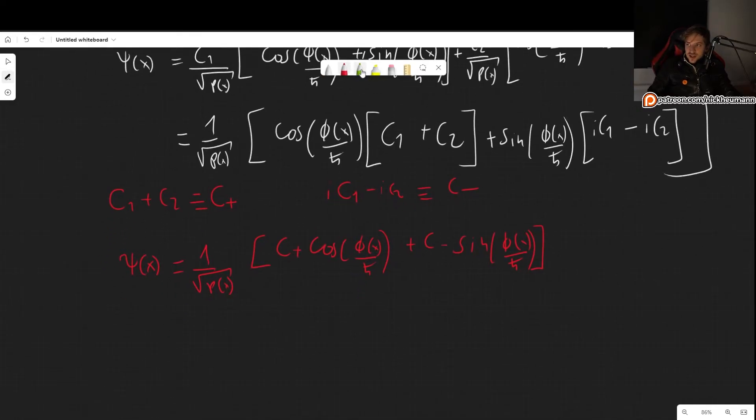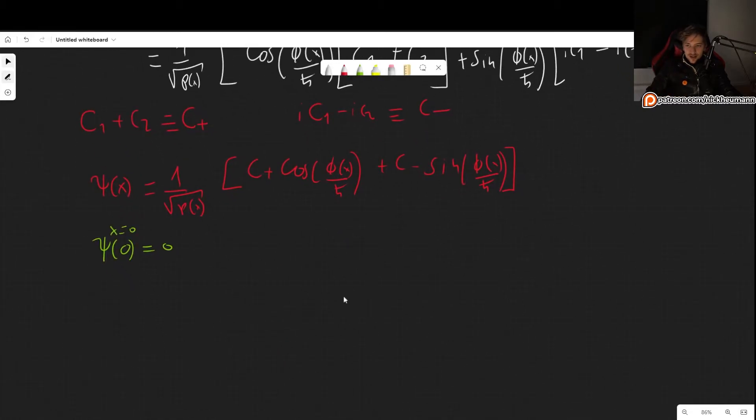There we go. And now this is much, much easier to apply boundary conditions. All this was simply so that we can get to something where applying boundary conditions is simpler. So let's begin with x equals zero, because it's always easier to put x equals zero into our equations. It's much more simpler than going for psi a. We're going to have to use that anyways later. But this is a good start.